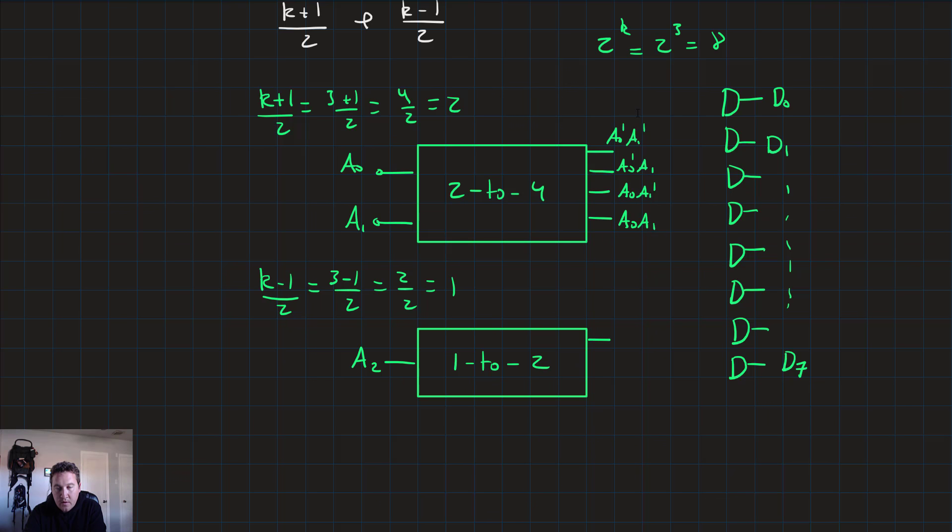And then the 2 to 4 would just have A2' and A2. And so I won't do all of these, but you would just sort of then start feeding the inputs by A0', A1', and A2', all the way down to A0, A1, and A2, and all of the other minterm combinations in between.